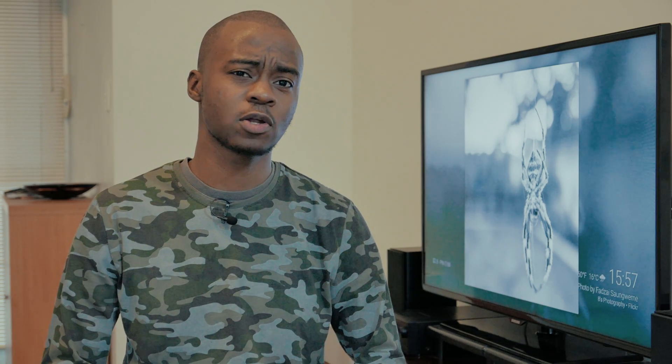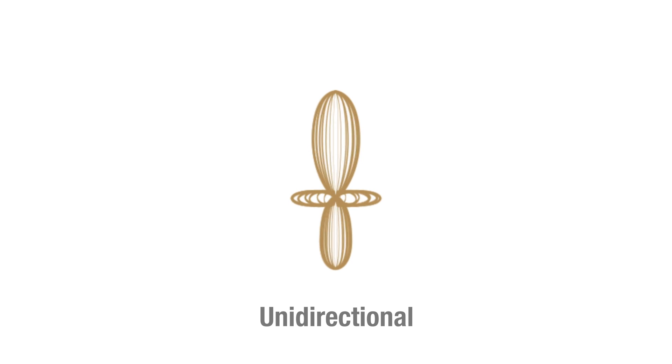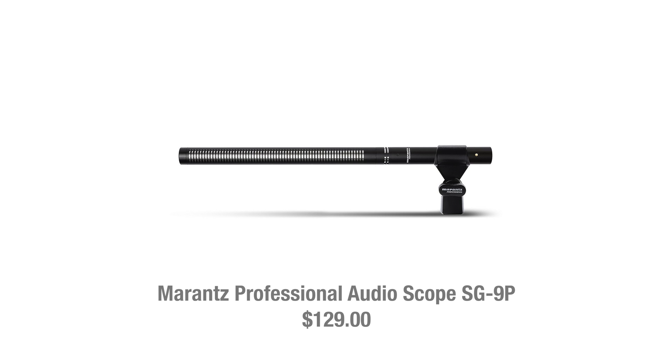The fifth polar pattern is known as the unidirectional or lobar pickup pattern. This is not a very common pickup pattern because it can only be delivered by specific shotgun mics, and even so, this polar pattern technically can't be 100% achieved. From the illustration, it's easy to see that the pickup pattern is very tight and directional — there's a lot of rear pickup and some slight pickup from the sides. It's really difficult to picture a situation where you'd need to use a unidirectional mic because they are very difficult to use; however, they can be used on film and movie sets. An example of a unidirectional mic is the Marantz Professional Audio Scope SG9P.